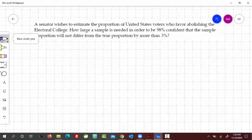A senator wishes to estimate the proportion of United States voters who favor abolishing the Electoral College. How large a sample is needed in order to be 98% confident that the sample proportion will not differ from the true proportion by more than 3%? So we have to find sample size.